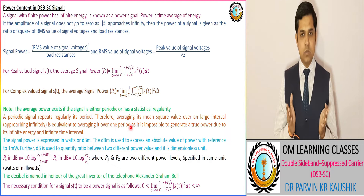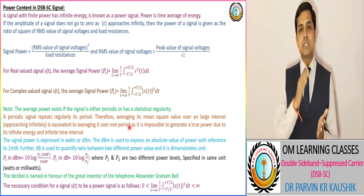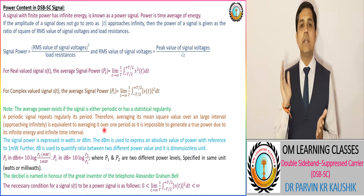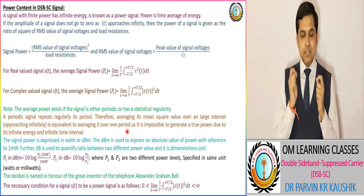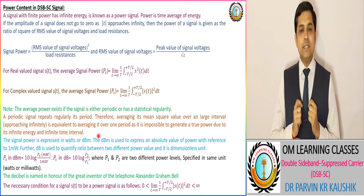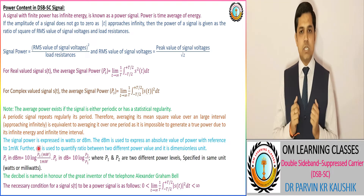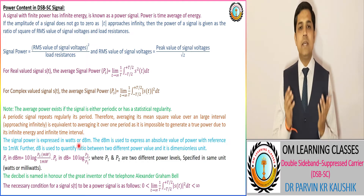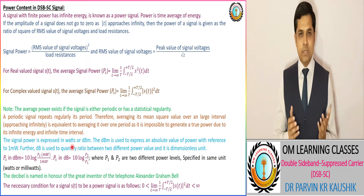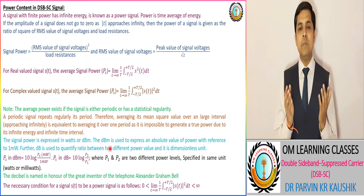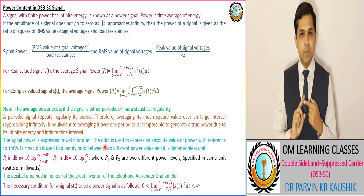If the signal is periodic, then its average value is considered instead of instantaneous value, and the average value corresponds to a single period as per its regular interval. Another important point: the power is expressed in watts or in dBm, where dB means decibel.